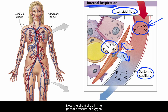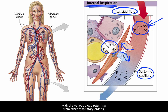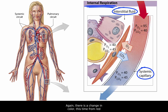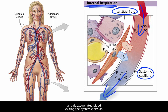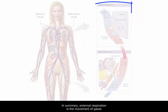Note the slight drop in the partial pressure of oxygen from 100 mmHg to 95, which is a result of the blood in the pulmonary veins mixing with the venous blood returning from other respiratory organs. Again, there is a change in color, this time from red to blue, indicating oxygenated blood entering and deoxygenated blood exiting the systemic circuit.